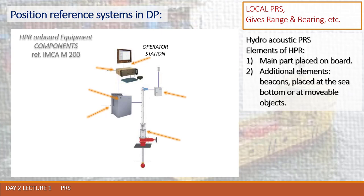The operator station is connected to a transceiver unit which generates the pulse of the HPR signal. The HPR equipment needs compensation for pitch and roll, so pitch and roll sensors are connected to the HPR station. To find directions at sea, heading information is also required, and for that reason a heading sensor is connected to the HPR station as well.